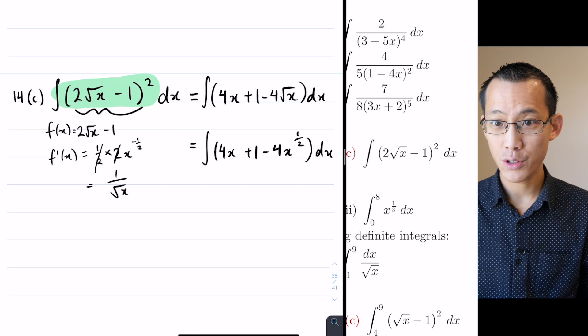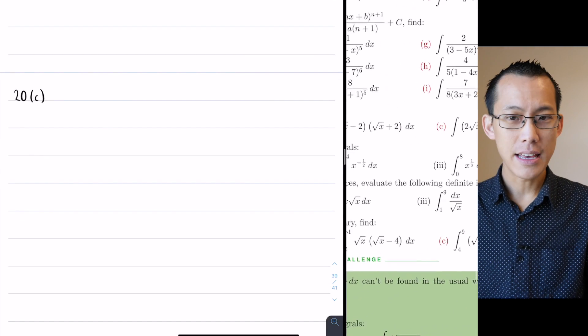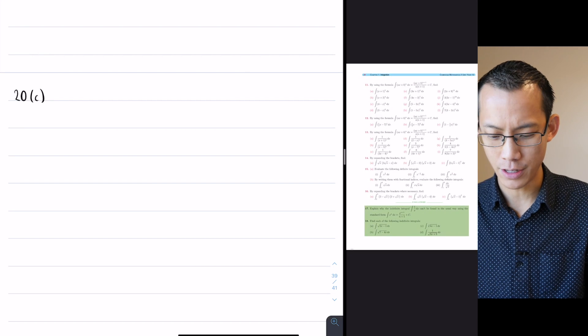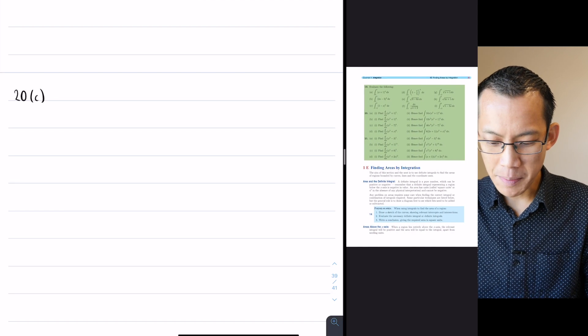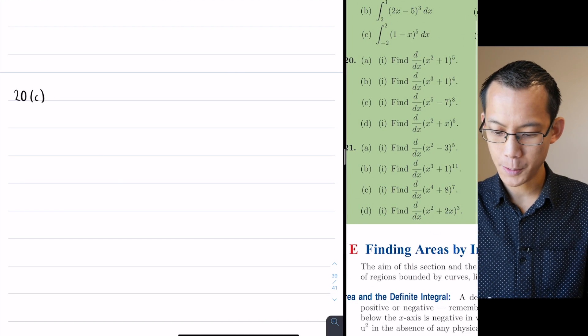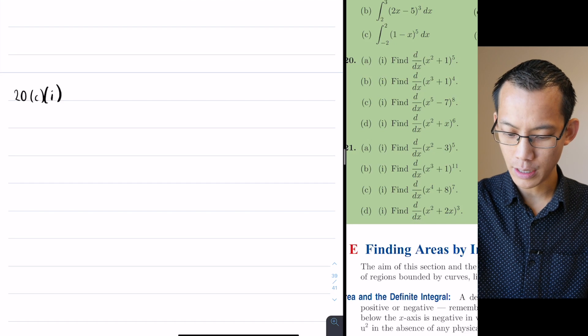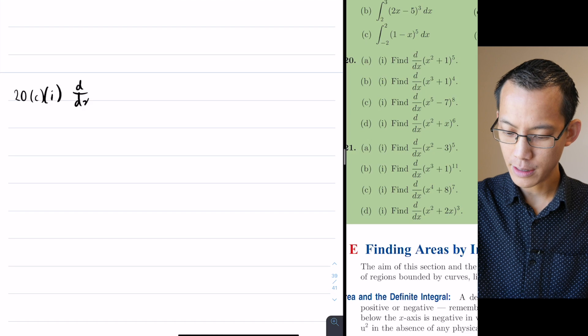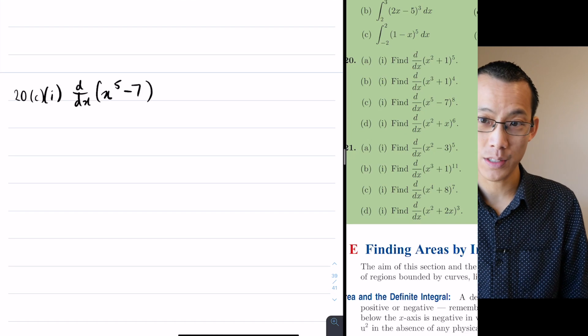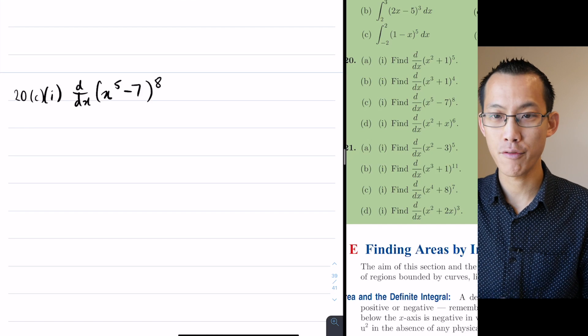Alright, now the last worked example that we're going to do before we close things up, and it's a good idea because we're looking at the time, is all the way in question 20. I'm skipping a lot of questions because there's a bunch of definite integrals here that we've already addressed. So 20 part c is a two-parter. Part one looks like this. Find the derivative of this term here, or this expression I should say.